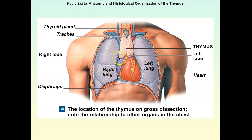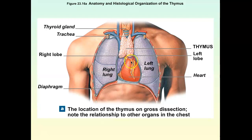What maturation means is that they learn to tell self from non-self. Cells that would respond to your own tissues are destroyed, because you don't want your immune system stimulated by your own body — you want them to ignore your own body and only respond to non-self antigens. Only 5% of cells that enter the thymus leave, because 95% get stimulated by your own body. When T cells leave the thymus, they go into a lymph node and become residents there. Lymph nodes contain lymphocytes.